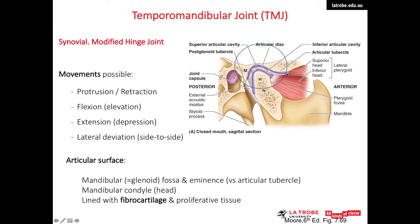The fibrocartilage is less susceptible to degeneration and has a greater repair capacity. The joint cavity is divided into upper and lower compartments by the fibrocartilaginous articular disc. The TMJ is a hinge joint which can perform rotatory movement as well as gliding movement. More specifically, it is called a modified hinge joint.